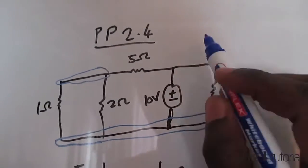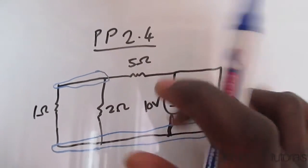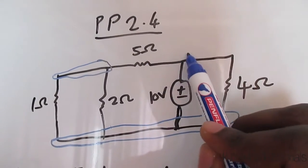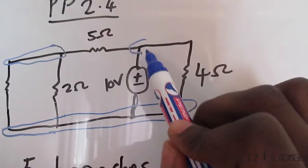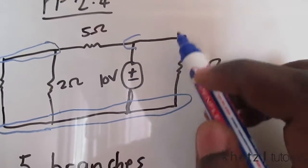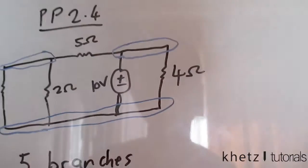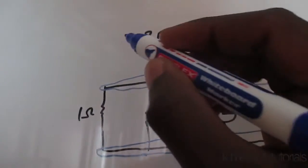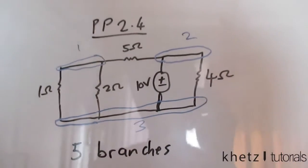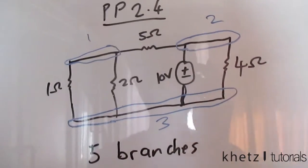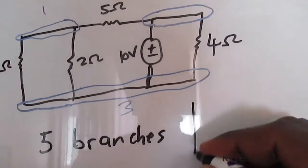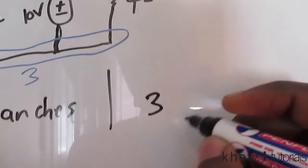There's a final node up here as well. There's no branch between this branch and this branch, so that qualifies as a node. There's also no branch between the connection of the voltage source and the resistor up here, so this whole thing is a node. If you count: one, two, three — the number of nodes is three.